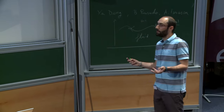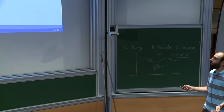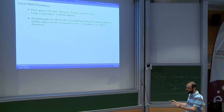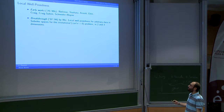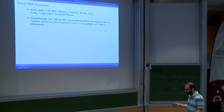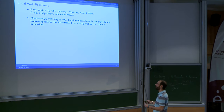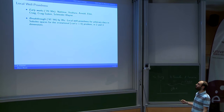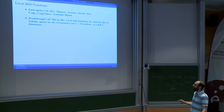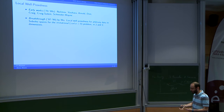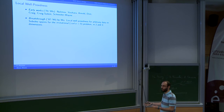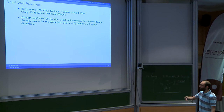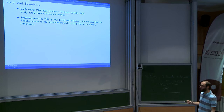On the other hand, the equations for nice and smooth initial data can be solved locally. There have been many works on this — early works from the 70s and 80s. At first people solved the equation in the analytic category, then smooth, then for small data. There have been very nice contributions by Walter Craig, and Schneider and Wayne, also relating local solutions to other models such as KdV and Boussinesq.